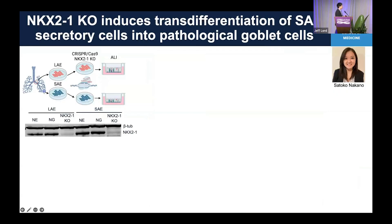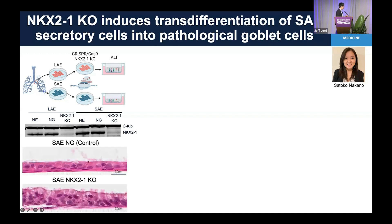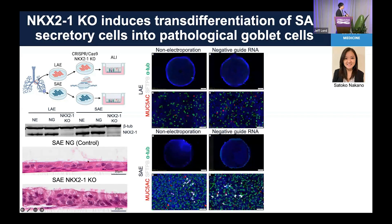Now we knocked out NKX2.1 in both large and small airway human airway epithelial cell cultures. NKX2.1 is actually expressed in not only small airways but large airways too, though expression is a little weaker. Our knockout efficiency using electroporation is more than 95 percent. Looking at the morphology of knockout versus control cultures, we see more granule-containing morphologically goblet-like cells in the knockout cultures.